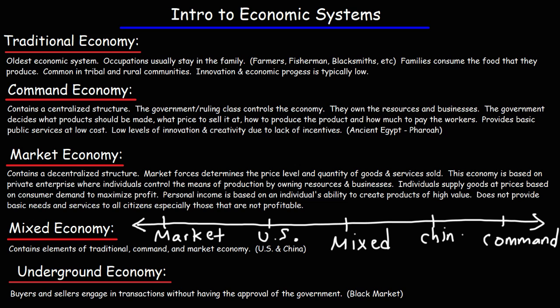Many countries have mixed economies containing elements of both market and command economies, though some lean more toward one side than the other — as in the case of the U.S. The last economy we'll cover is the underground economy, where buyers and sellers engage in transactions without government approval. For example, someone selling something without a license could be operating in the underground economy, also known as the black market.